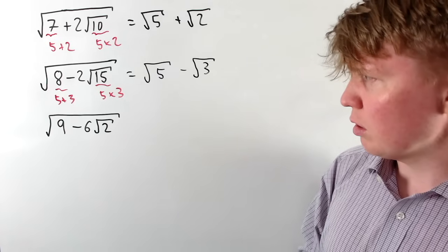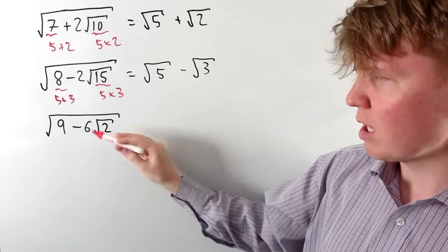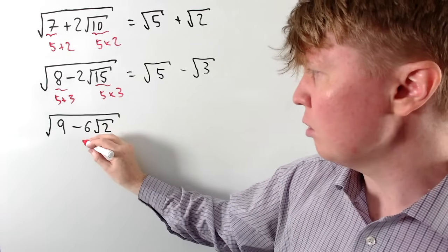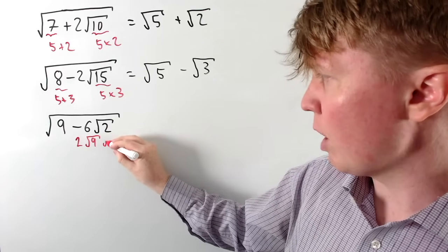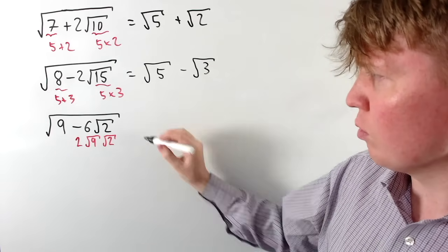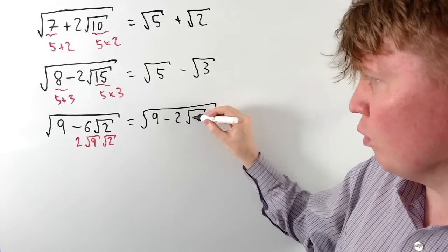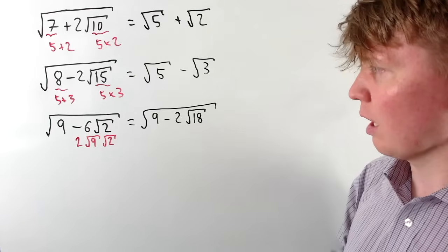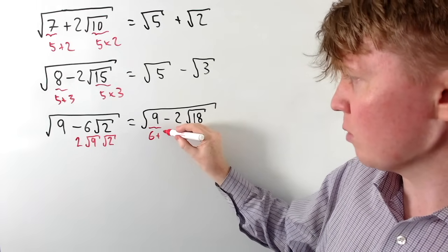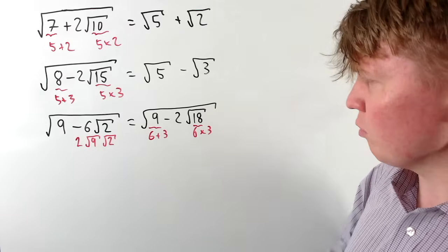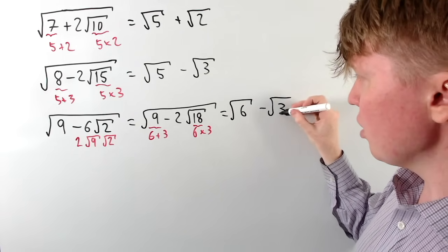For this next one, the trick doesn't quite work with 9 and 2. But we have a coefficient of 6 next to our square root, and we can write 6 as 2 times 3, or 2 times the square root of 9 times the square root of 2. So we rewrite the expression as 9 minus 2√18. Then we can apply the same trick with 6 and 3: 6 plus 3 makes 9, and 6 times 3 makes 18, so this becomes root 6 minus root 3.